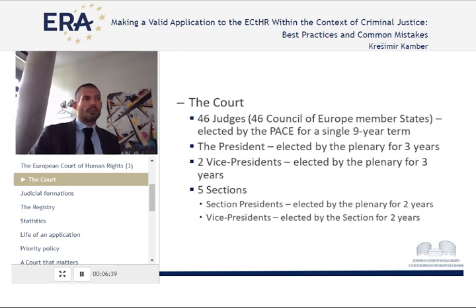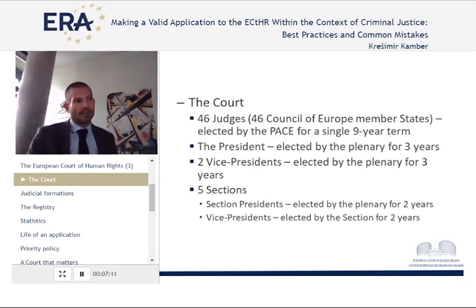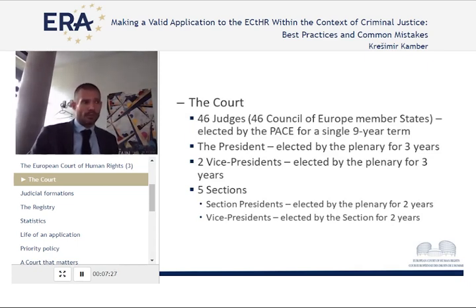The plenary court — all the judges — elects its own president and two vice presidents for a term of three years. These 46 judges sit in five sections, so you will often see that a judgment was adopted by section one, two, three, or five. Each section has a section president and vice presidents elected for two years. The respective countries against which you may lodge an application will be divided into one of the sections, with the idea of having geographical division of Europe represented, along with judges with different backgrounds — university professors, experts in international law, criminal and civil law — and gender balance within sections.